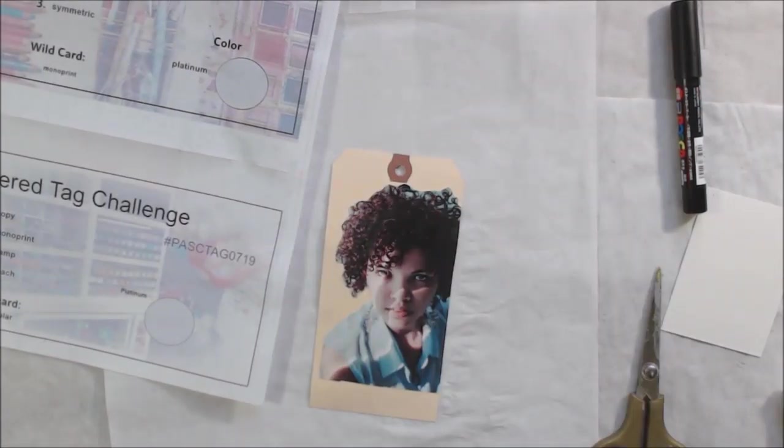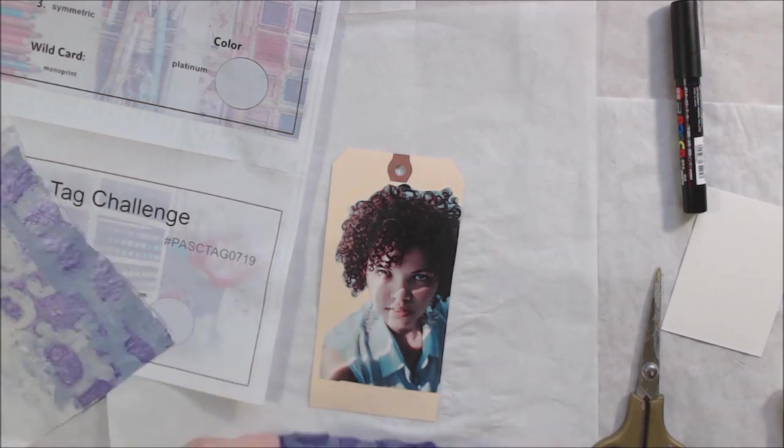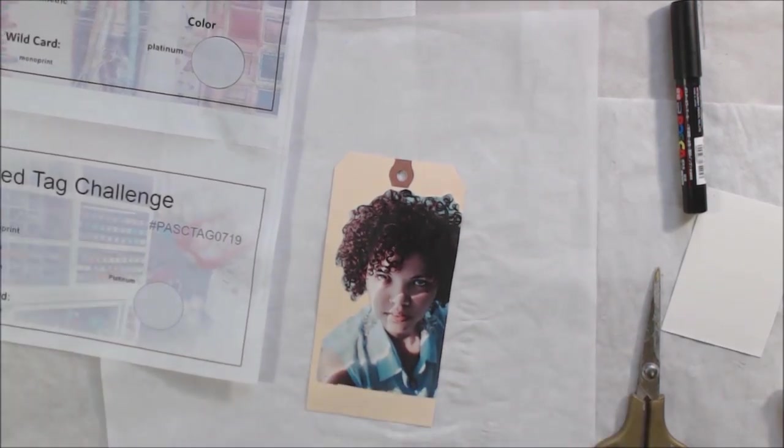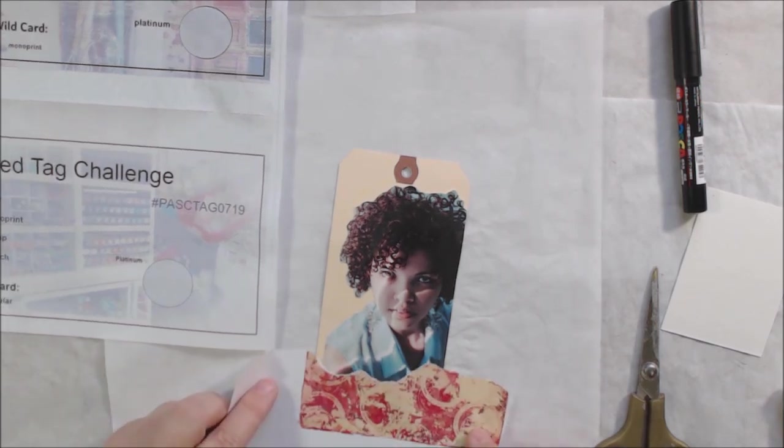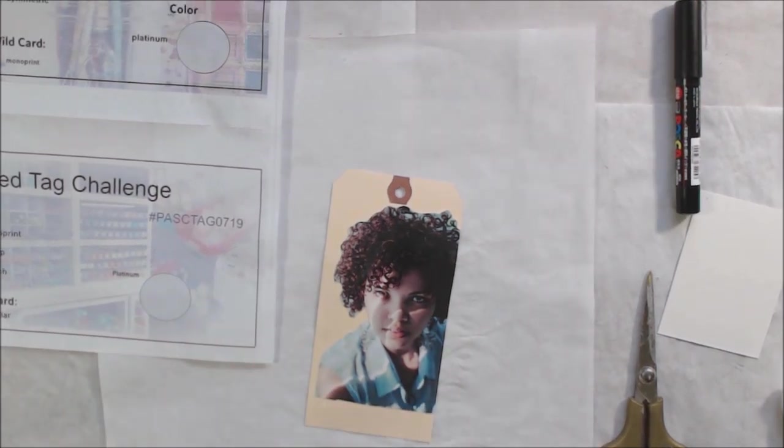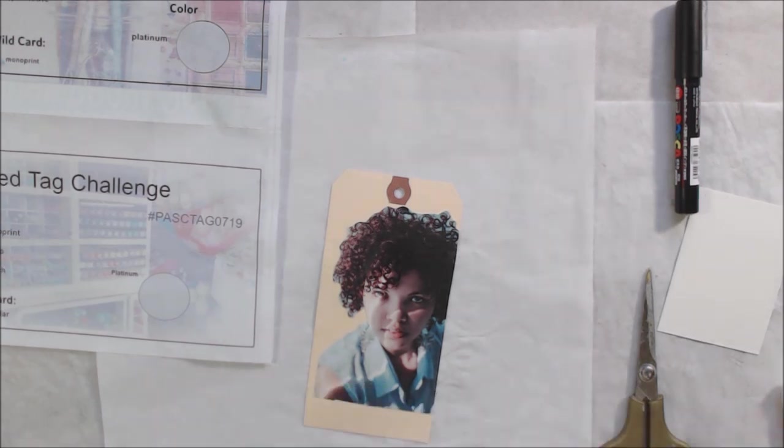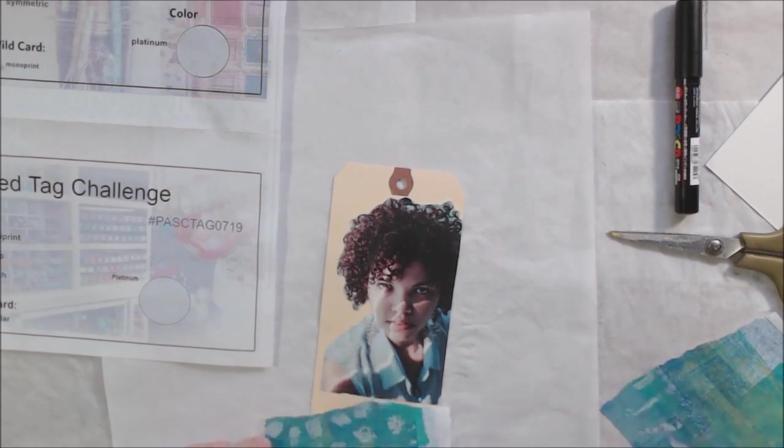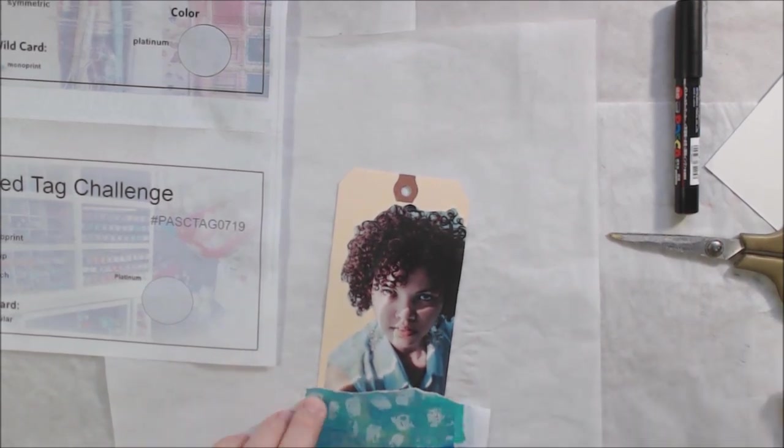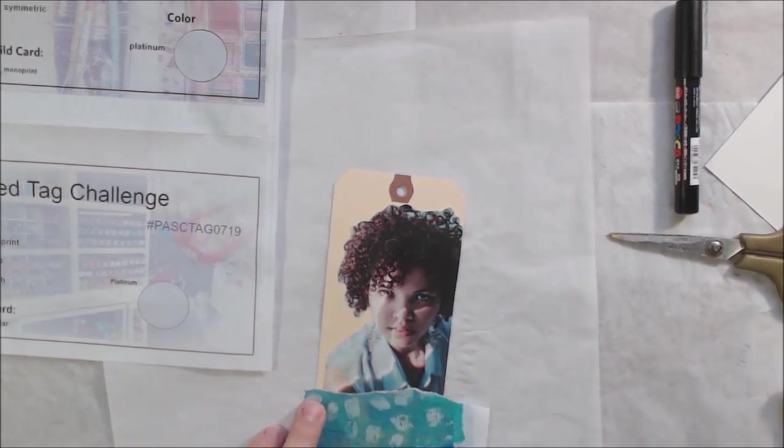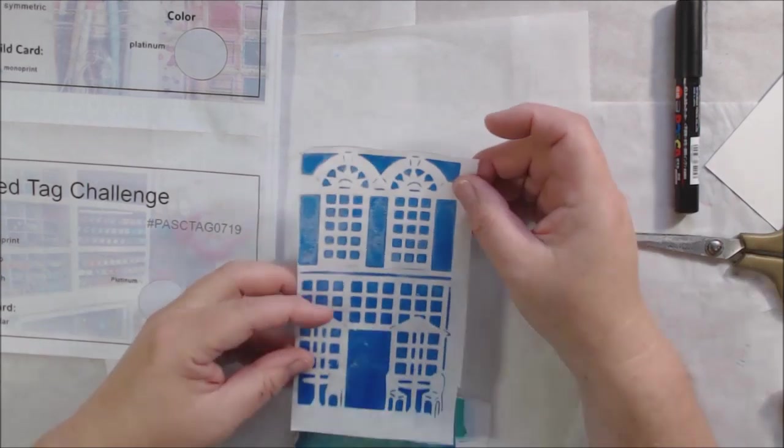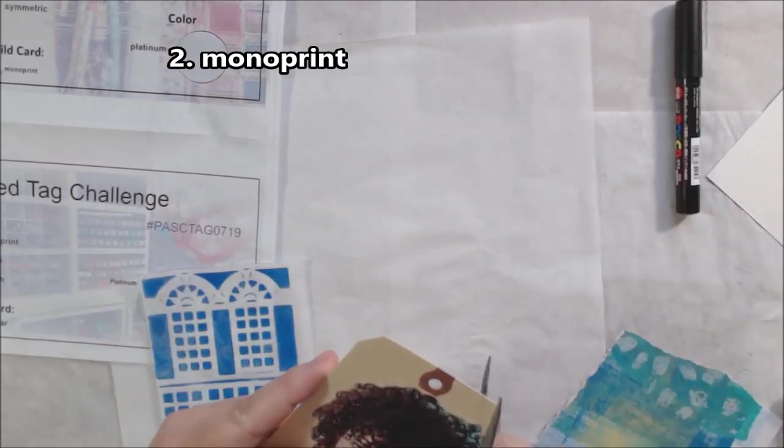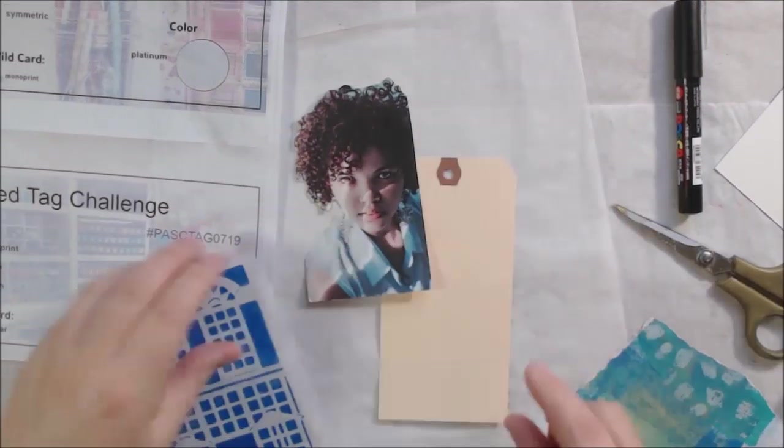Pick a stick challenge is all about one word prompts that are randomly drawn. We draw some sticks, we provide challenges each month, and there are three challenges: an art journal page, a tag, and an ATC. I will link in the iCard above my art journal page for this month if you haven't seen the July art journal page.